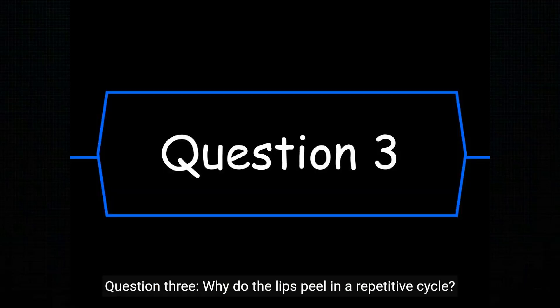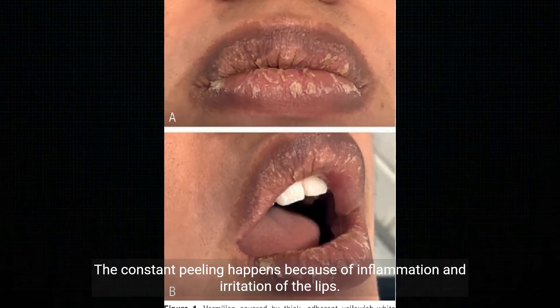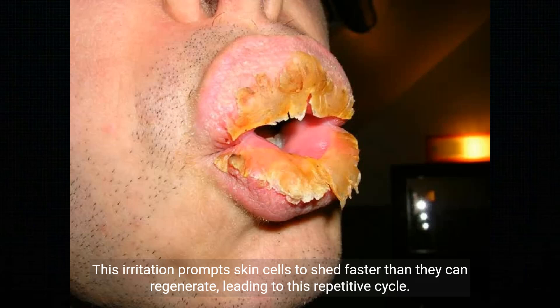Question 3: why do the lips peel in a repetitive cycle? Exfoliative cheilitis causes a continuous cycle of peeling and healing due to an accelerated turnover of skin cells in the lips. The constant peeling happens because of inflammation and irritation of the lips. This irritation prompts skin cells to shed faster than they can regenerate, leading to this repetitive cycle.